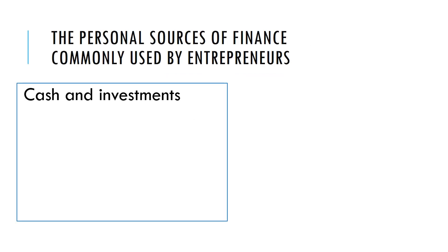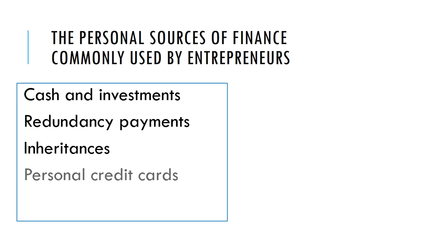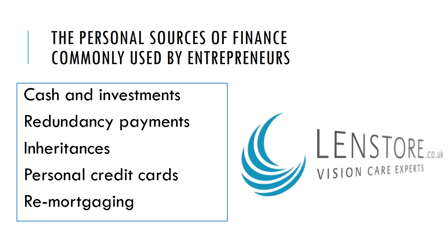Typically entrepreneurs might source this from cash savings they have or investments they've made previously. Perhaps if they've been made redundant, many entrepreneurs use that as an opportunity to set up a business. Other sources include inheritances, personal credit cards, or maybe taking out a large loan against their house and using that money to start a business. For example, one entrepreneur used earnings from a previous job as a management consultant to start their startup.